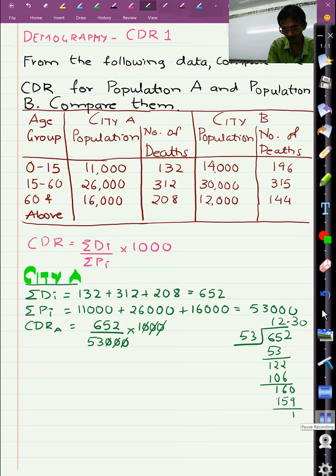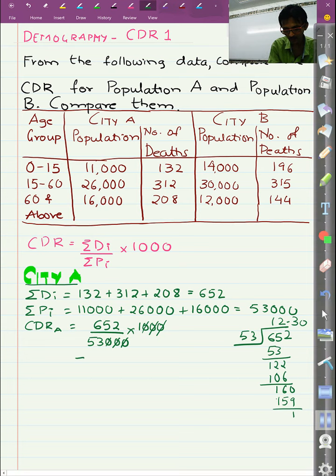By doing this simple calculation, we get CDR for City A as 12.30. As I told you, CDR is measured per 1000.